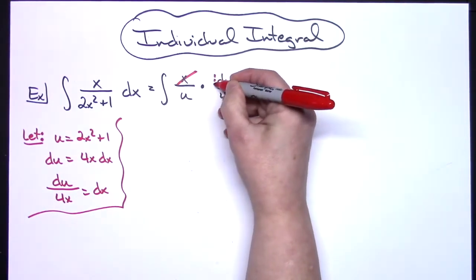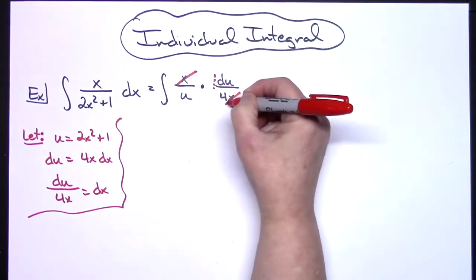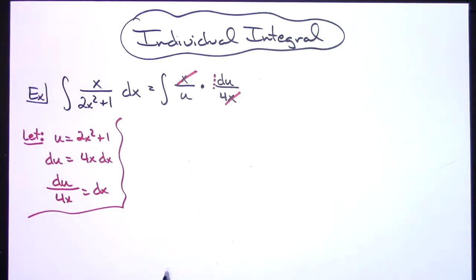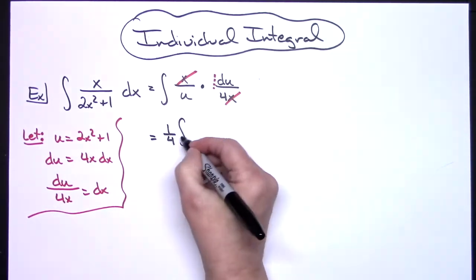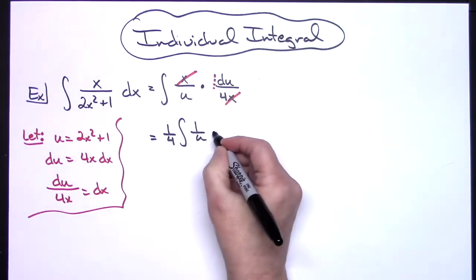And then I'll be able to see very clearly that I'm going to have to pull out a one-fourth out in front of this integral. So then I'll have one-fourth the integral of 1 over u du.